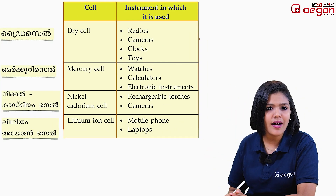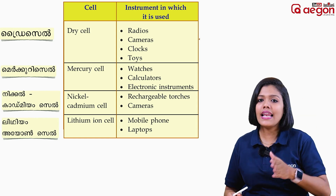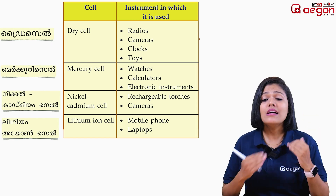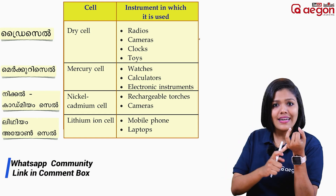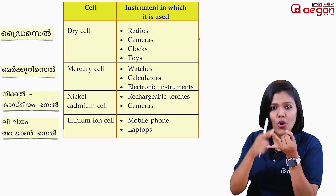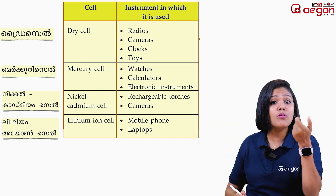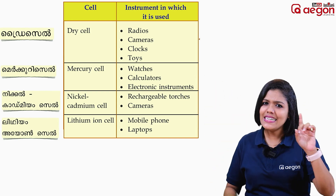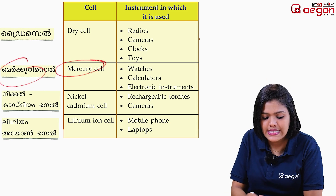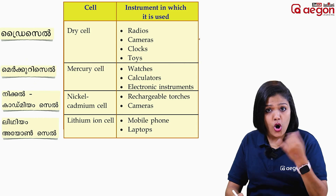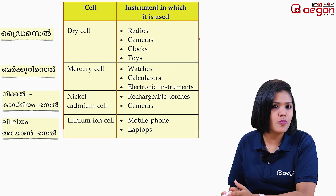On the last page, we have a topic. This is an example. Dry cell — used in toys, clocks, cameras, and computers. Mercury cell — used in watches, calculators, and other electronic instruments.